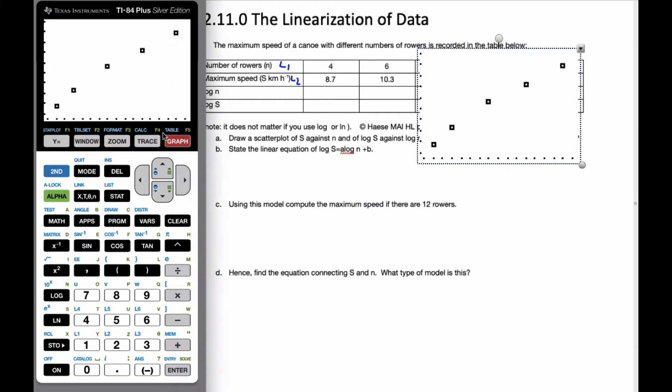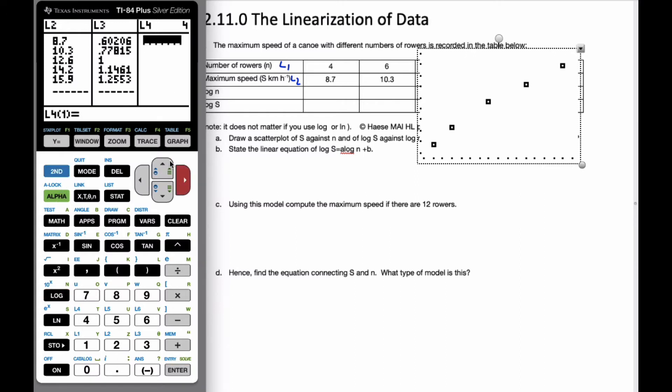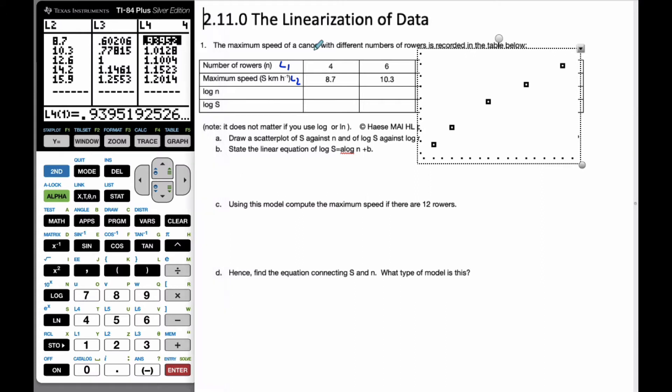All right, so let me just pull this over here for a moment. Then I want to also do log s versus log n. So if I go back to my lists, I'm going to go on top of 3, and I'm going to go log of L1. And then I'm going to do the log of L2. And so now, just keeping track of what I have, this is L3 and this is L4.